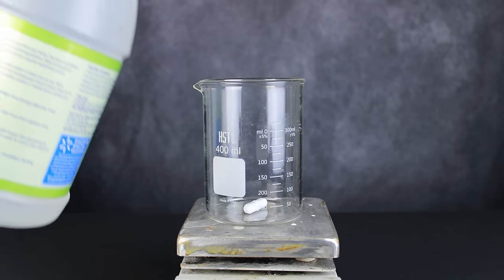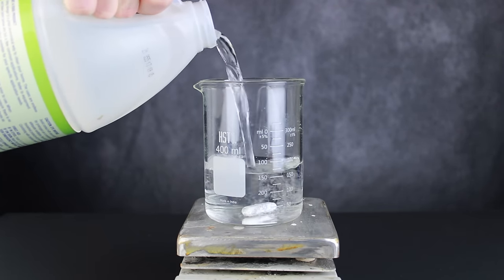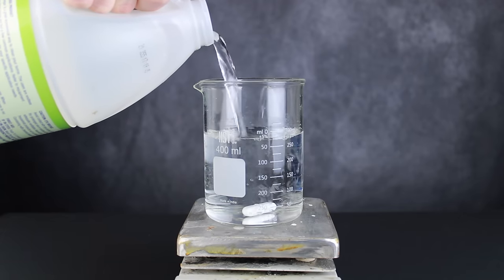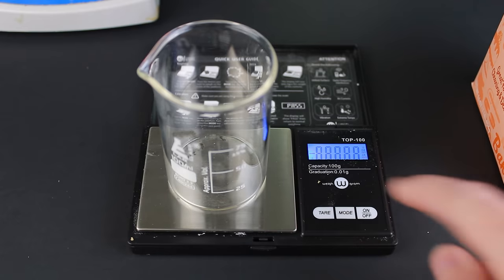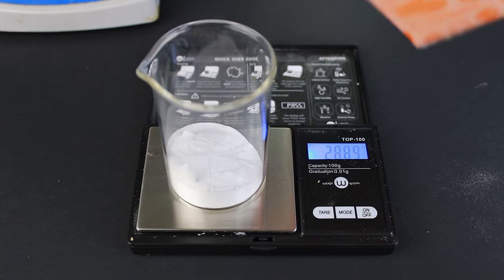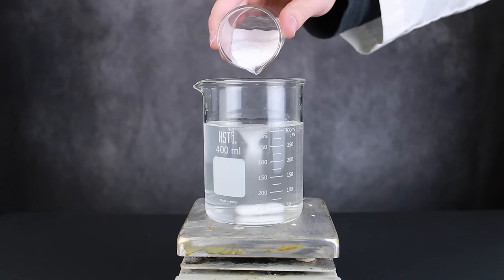To start, I filled a beaker with about 300 milliliters of 5% acetic acid, otherwise known as common white vinegar. In total, we will need 400 milliliters, but my beaker could only fit 300 mils at a time. Next, 28 grams of sodium bicarbonate was weighed out on a scale. This was gradually added to the vinegar with strong stirring to prevent excessive foaming.